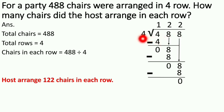488 and 4 is outside of the bracket. Now say table of 4. 4 ones are 4. 4 minus 4 is 0. 8 down as it is. Then 4 twos are 8. 8 minus 8 is 0.